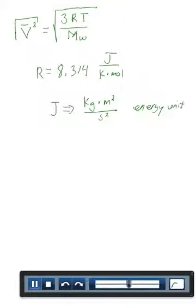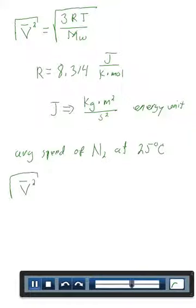So, if we want to know the average speed of nitrogen at room temperature, we can solve for the root mean square speed. That's equal to 3 times R.